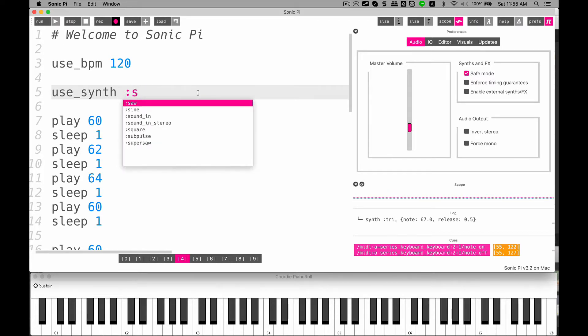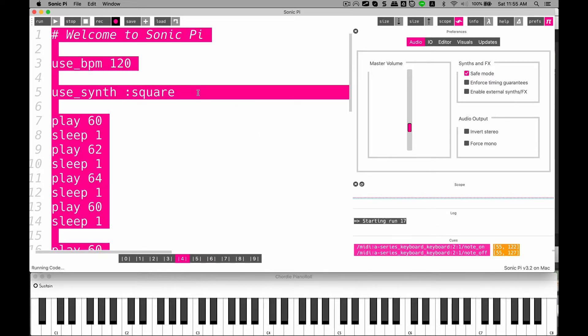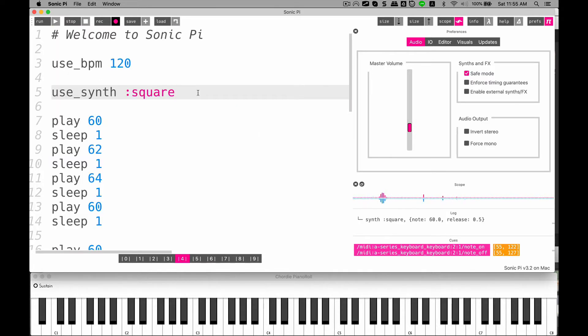Let's try square, S-Q-U-A-R-E. Square. I guess the square is more like a saw, but not harsh. But the triangular gives me a little bit smoother. Let's try another one.